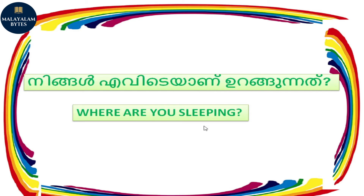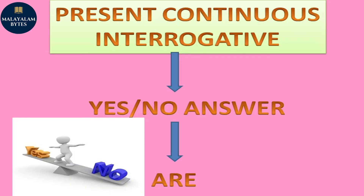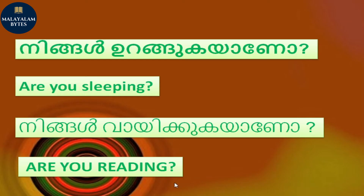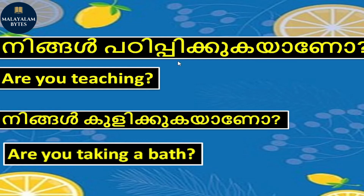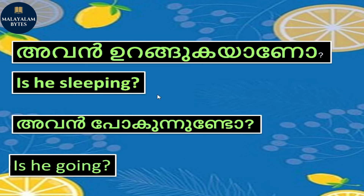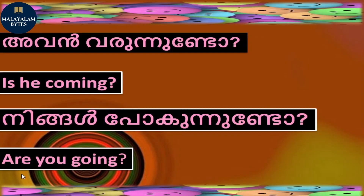Friends, for yes/no questions in present continuous tense, we start with the helping verb. Are you sleeping? Are you reading? Are you teaching? Are you taking a bath? Is he sleeping? Is he going? When the subject is he, we use 'is' first. When subject is you, we use 'are'. Is he coming? Are you going?